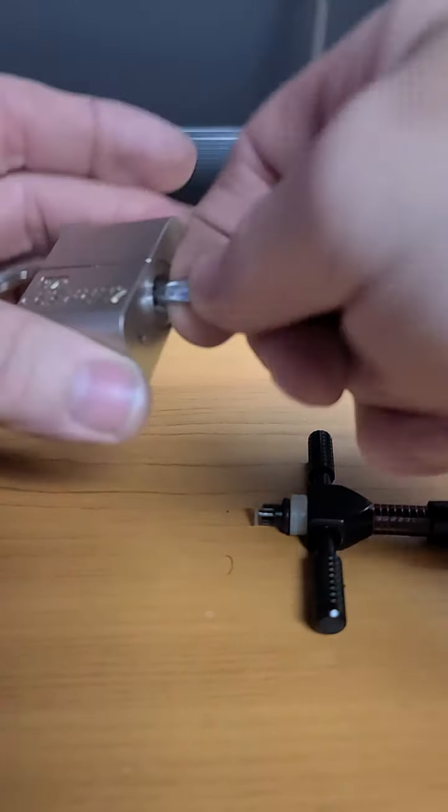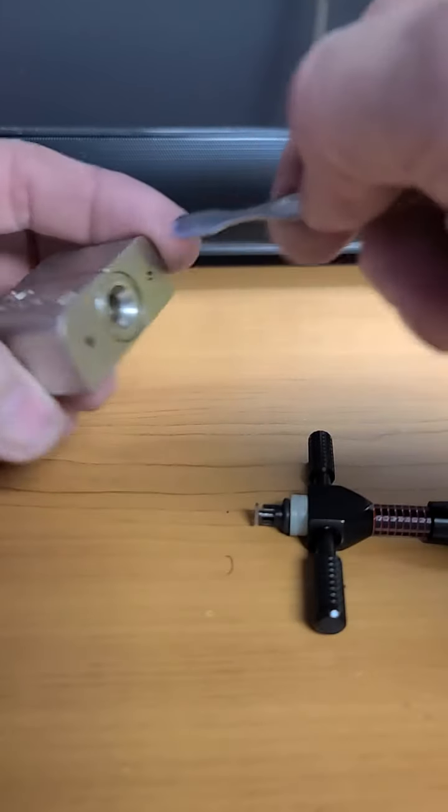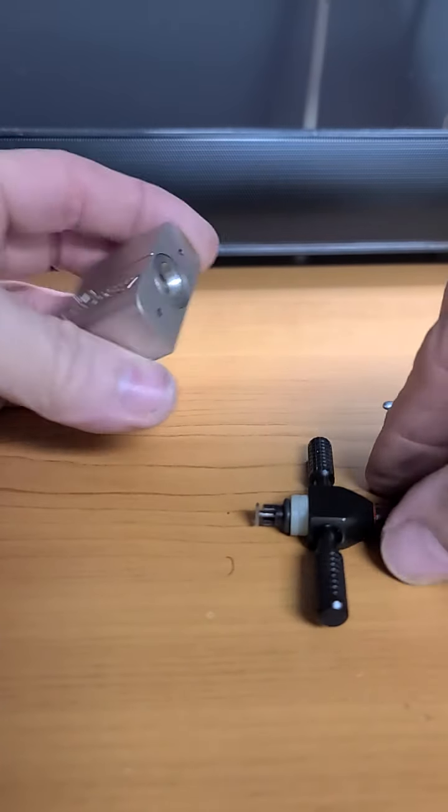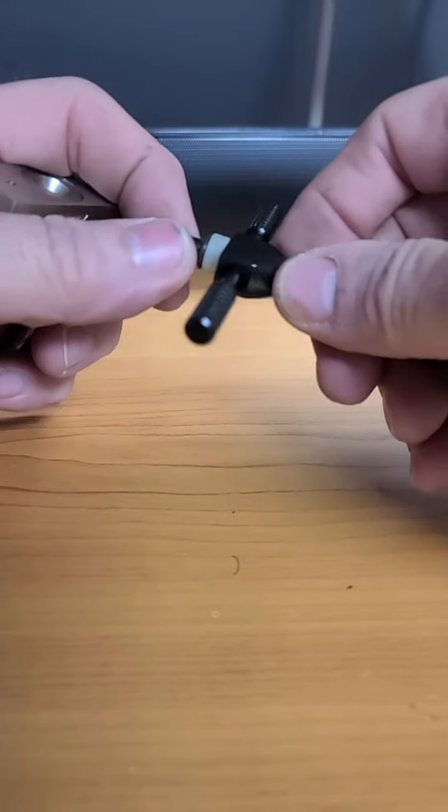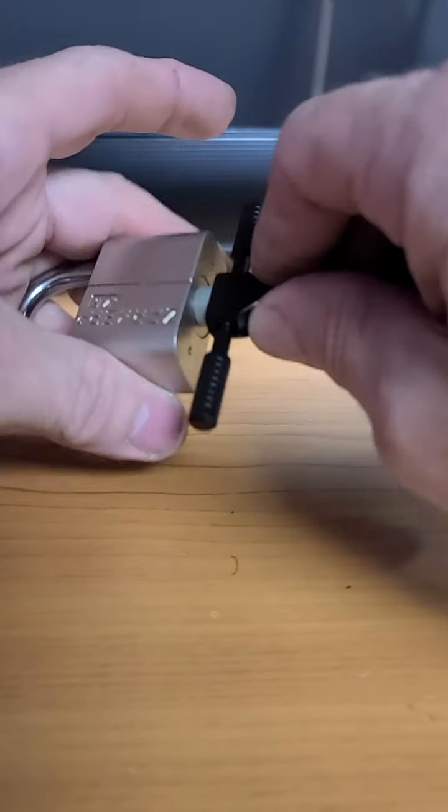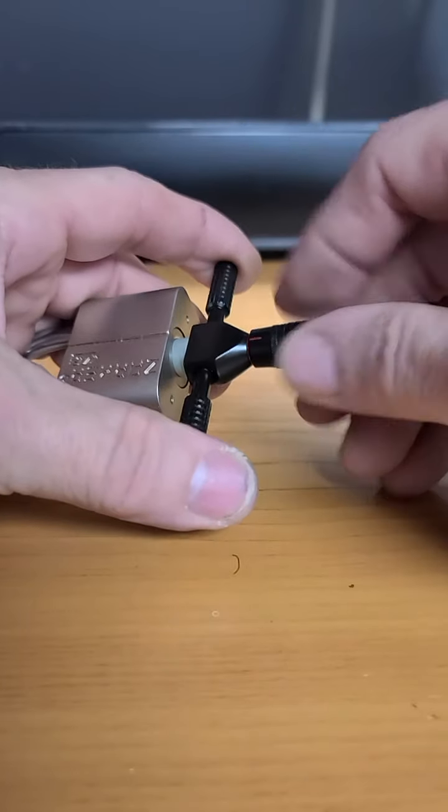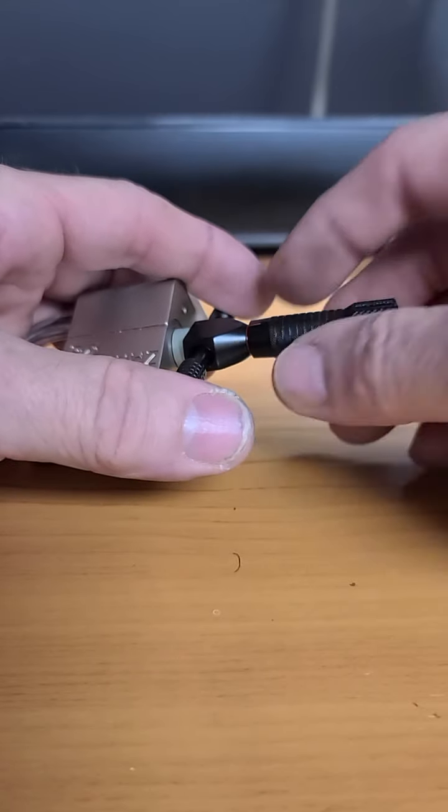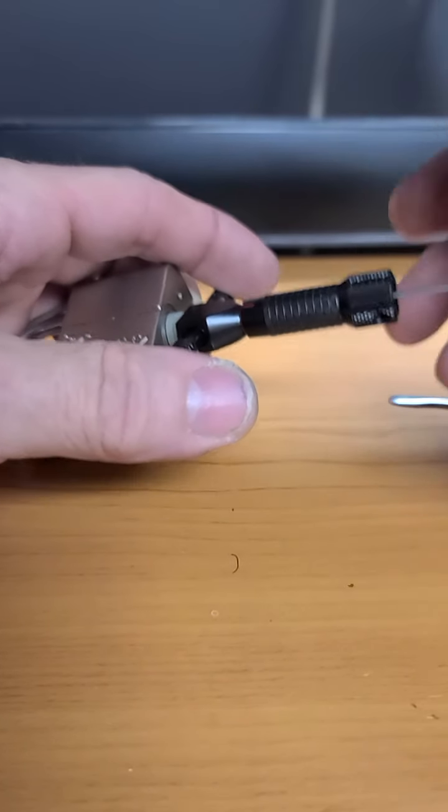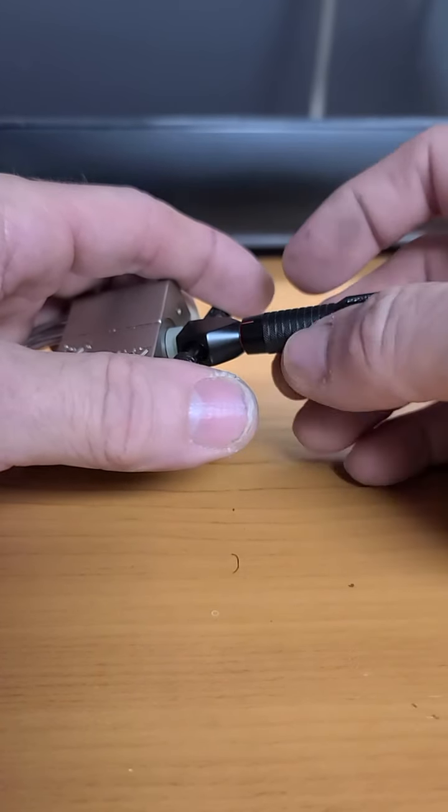Turn everything clockwise as far as it will go. Line up the tip with the slot and the pick. Take yourself to the bottom. Put just a little bit of tension on it, not much. Just a little tension and try to keep it straight. That's one of the most difficult things.